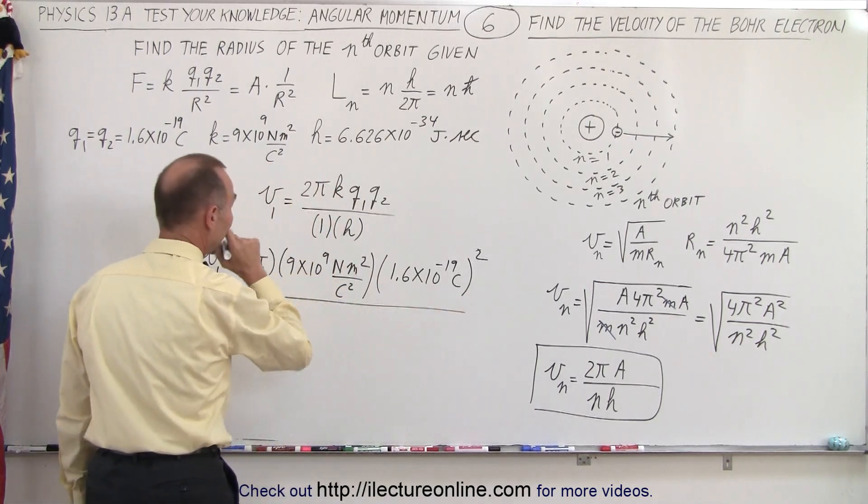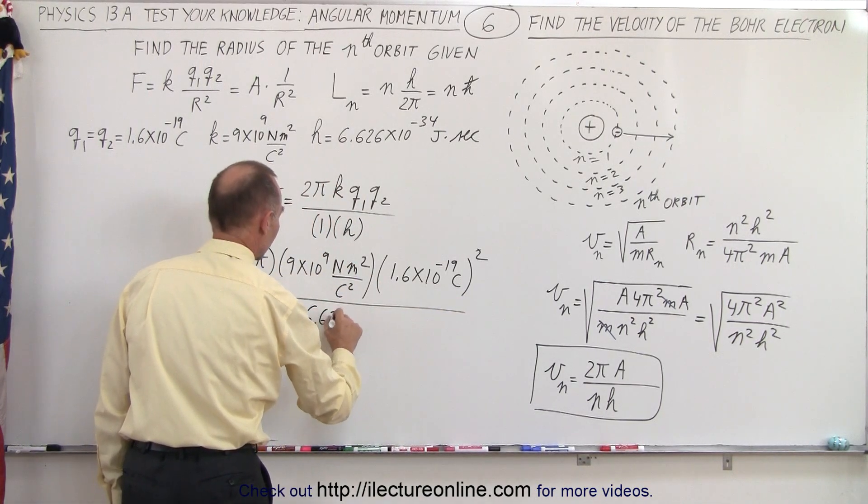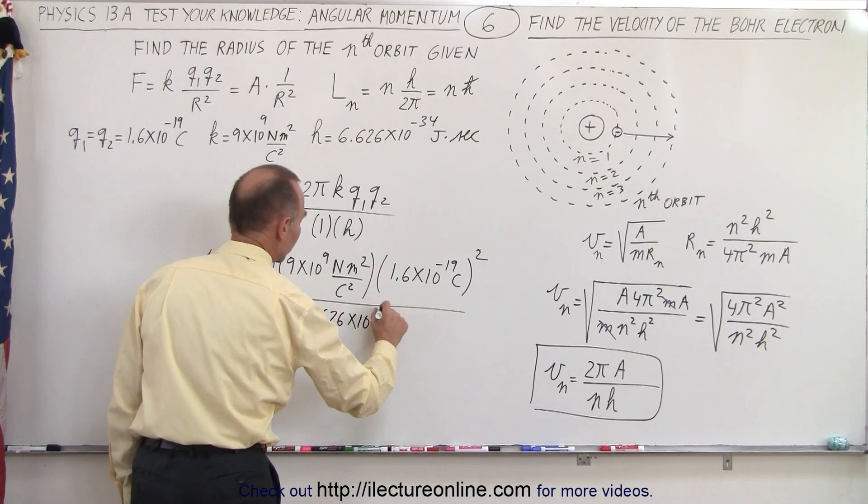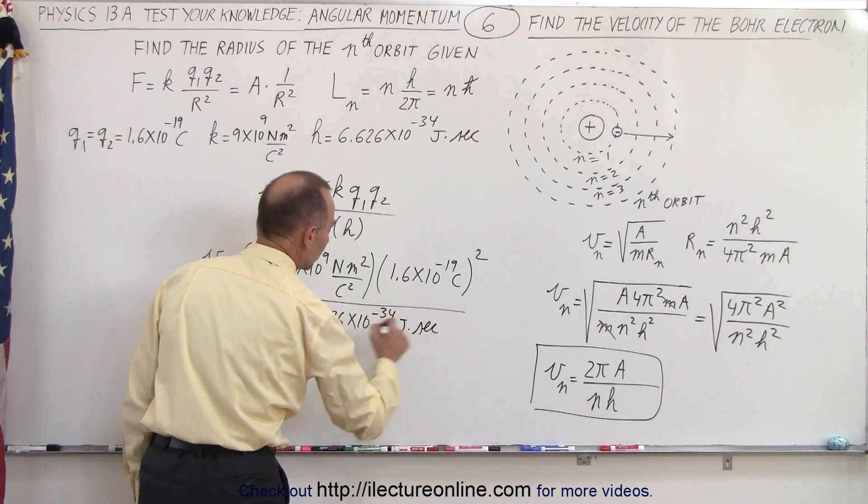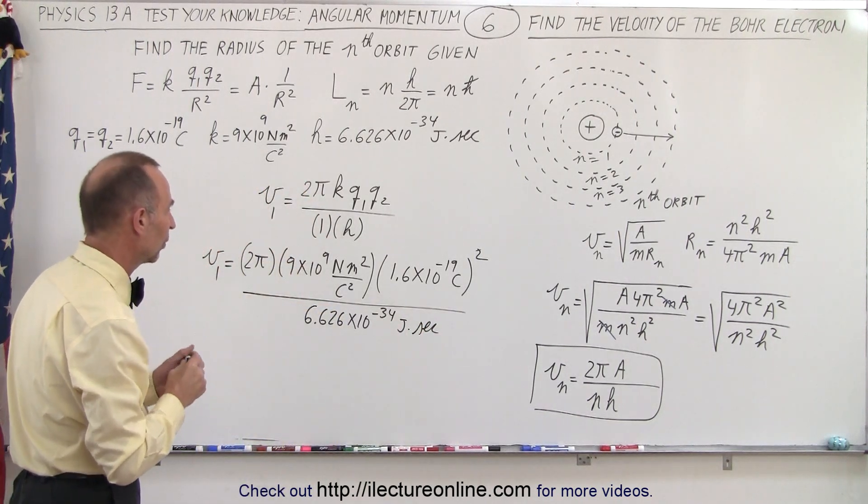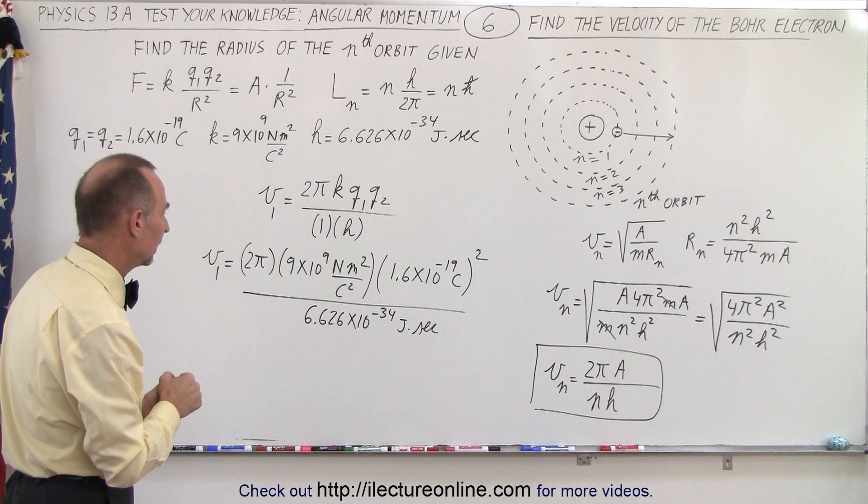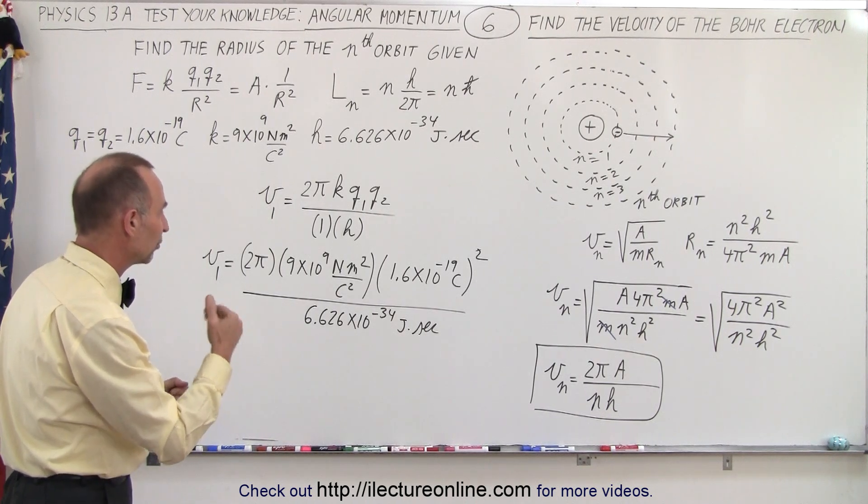And we divide everything by 6.626 times 10 to the minus 34 joules times seconds. Now a joule is a newton meter, so a newton meter times seconds. So a newton cancels out, then we end up with meters per second.